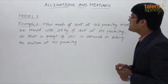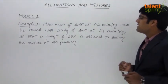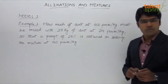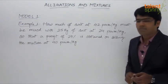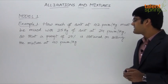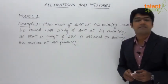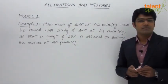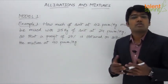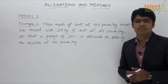The first example asks: how much salt at 42 paisa per kg must be mixed with 25 kg of salt at 24 paisa per kg, so that a profit of 25% is obtained on selling the mixture at 40 paisa per kg? This question involves combining two different varieties of salt to obtain a mixture at a given price.